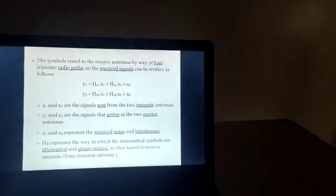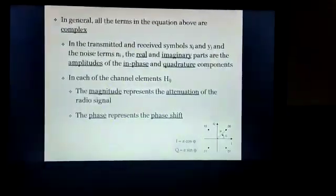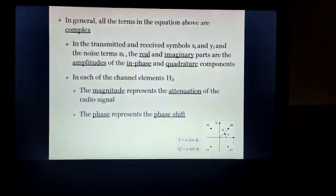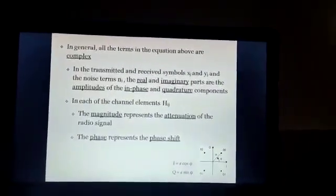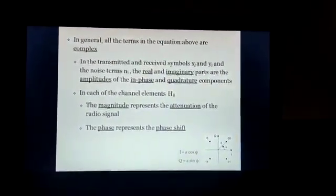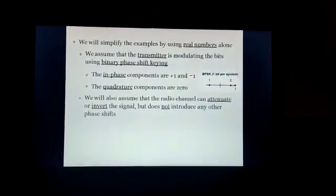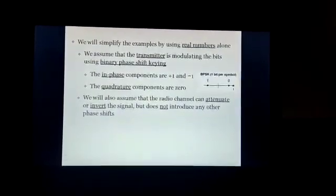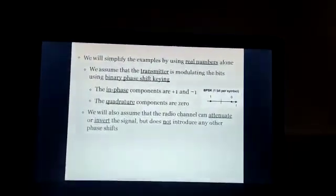Here, x1 and x2 are the signals sent from the transmit antennas; y1 and y2 are the signals arriving at the two receive antennas; n1 and n2 represent the noise and interference; and hij expresses the way in which the transmitted symbols are attenuated and phase shifted. In general, all terms in the equations are complex. In each channel element hij, the magnitude represents the attenuation of the radio signal and the phase represents the phase shift. We can simplify using real numbers alone by assuming the transmitter uses binary phase shift keying (BPSK), so the in-phase components are +1 and -1 and the quadrature components are zero.